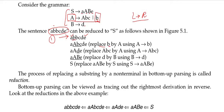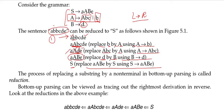After replacing b with capital A, we now have A, b, c. The substring A b c matches the right hand side of production A → Abc, so we replace A b c with capital A using that production. Now we have a, A, d, e. Next, d matches the right hand side of production B → d, so we replace d with B. Finally, the whole string a A B e matches S → aABe, so we replace it with S — the start symbol.